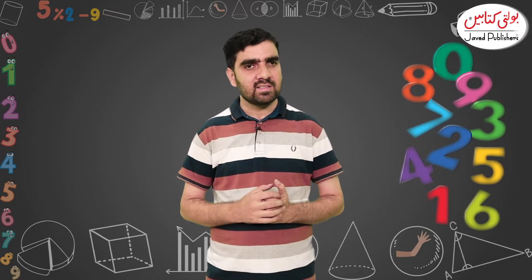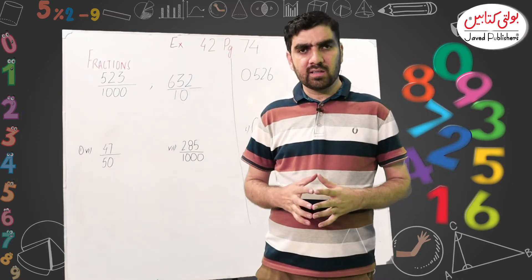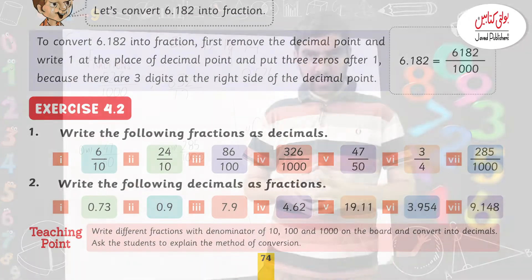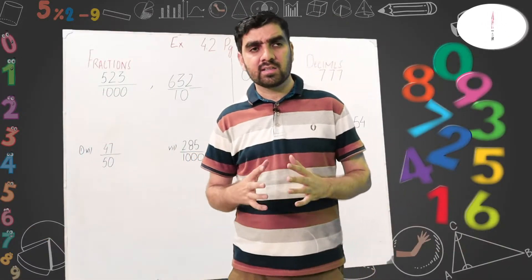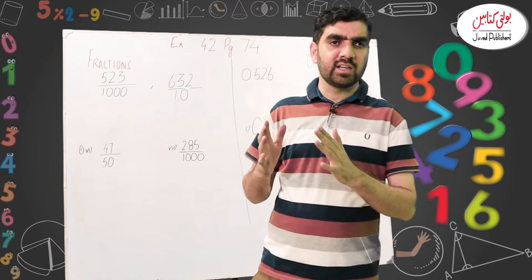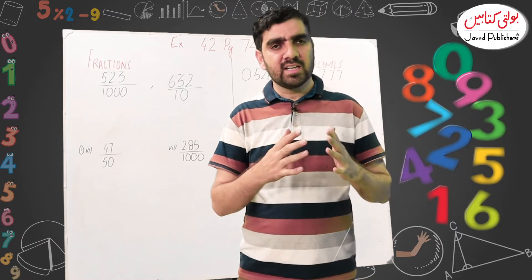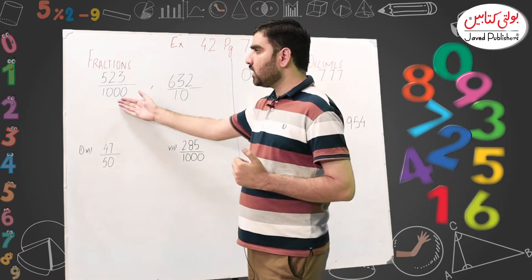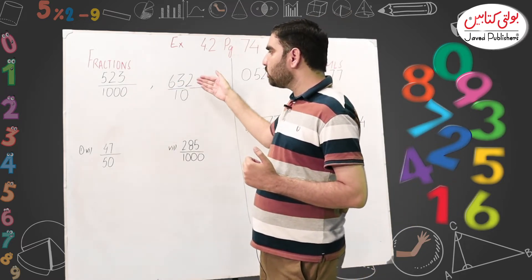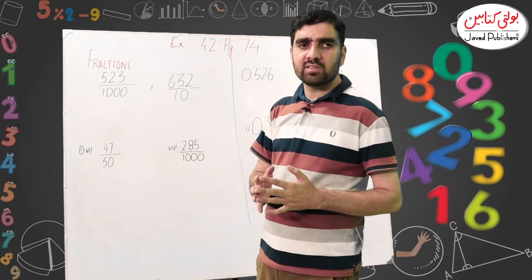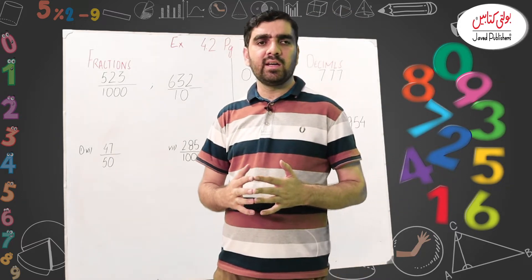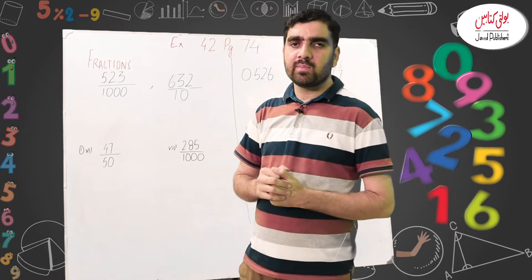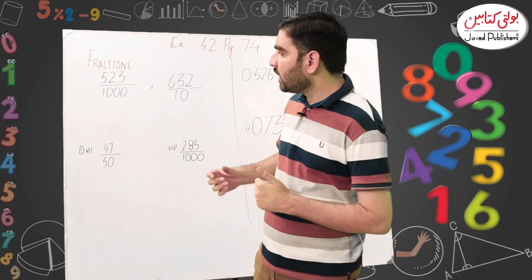Bismillah, respected teachers. We are going to start Exercise number 4.2 and in this exercise we will discuss how to convert fractions into decimals and decimals into fractions. Here are some fractions: 523 over 1000 and 632 over 10. The denominators will be 10, 100, or 1000.